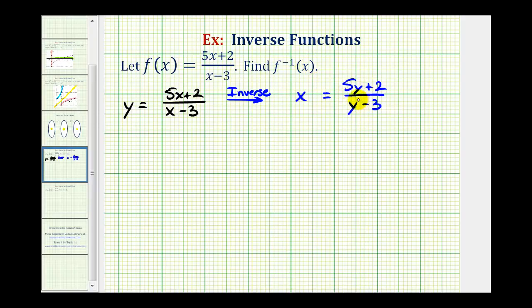So because the right side is in fraction form, we could put this x over one and then cross multiply, meaning x times the quantity y minus three must equal one times the quantity five y plus two. Or we could just multiply both sides by the quantity y minus three. Either way, we would have x times the quantity y minus three equals five y plus two.